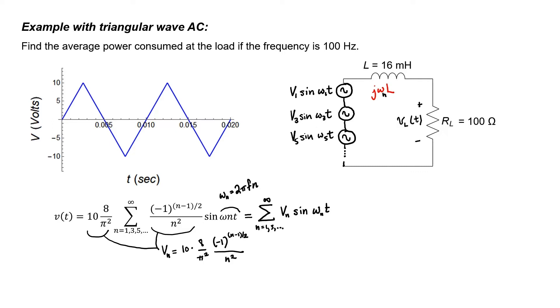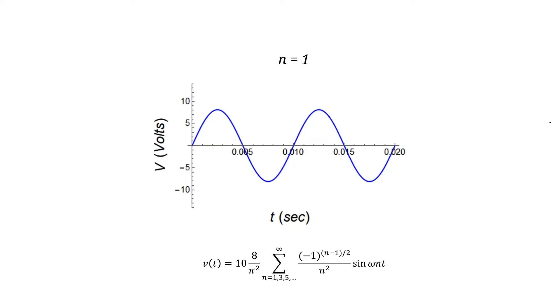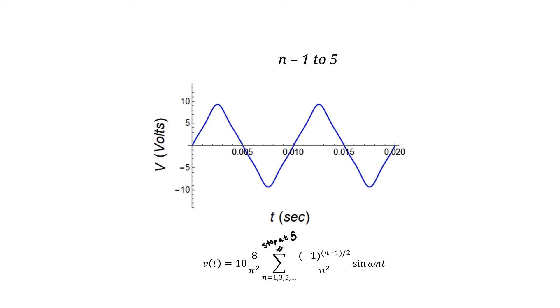Let's call the voltage across our load V sub l. Let's take a look at a few of these components so that we can see that our triangular wave can indeed be represented as a sum of various sine waves. Here's what it looks like with just the first component. Here's what it looks like with 2 components, 3 components, 8 components, and 18 components. As you can see, with only 18 components our series of sine waves resembles our triangular wave very closely.